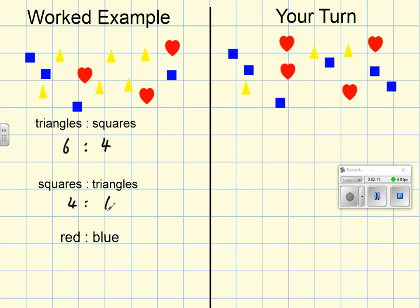And this third example we're going to look at now is to do with color rather than the shapes. So I need to count how many red shapes do I have—1, 2, 3—I've got 3 red shapes, and the ratio to blue is 1, 2, 3, 4. The ratio of red to blue is 3 to 4.